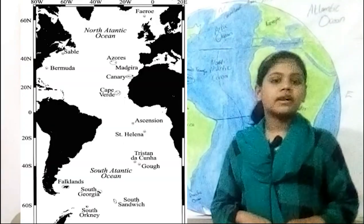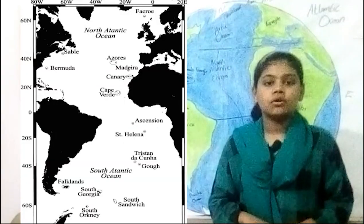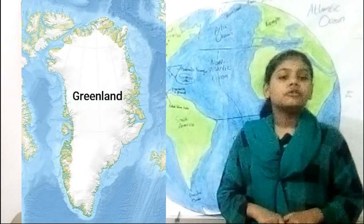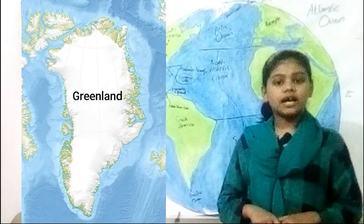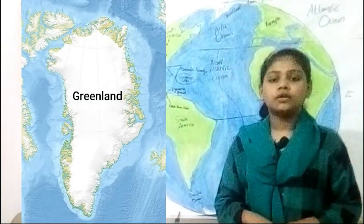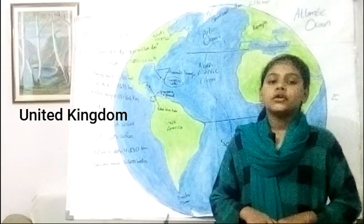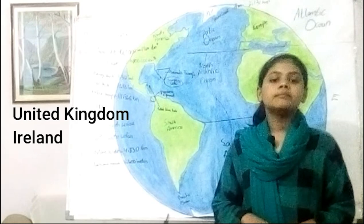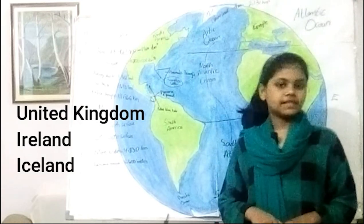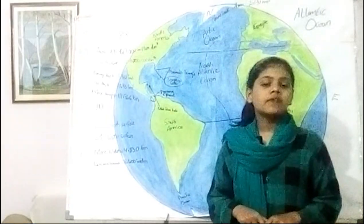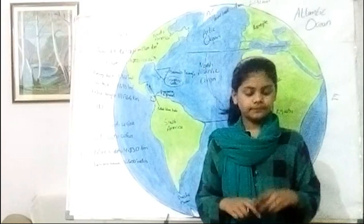What is called an archipelago is a chain or group of islands. Greenland is the largest island in the world. The Atlantic Ocean also includes United Kingdom, Ireland, and Iceland. Let's see some groups of islands in the Atlantic Ocean.